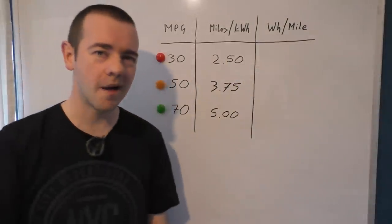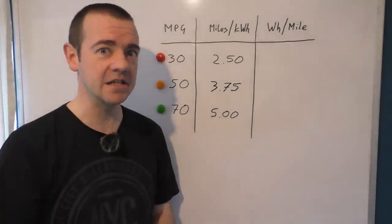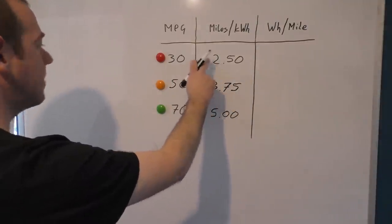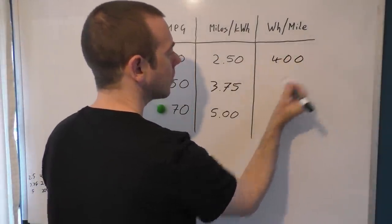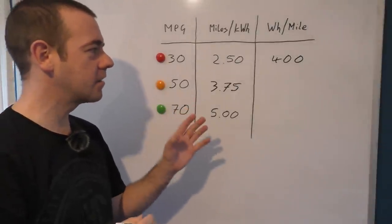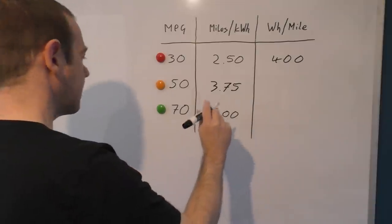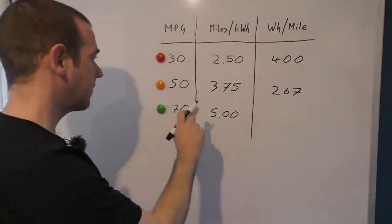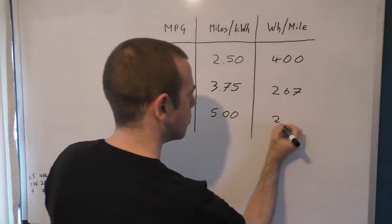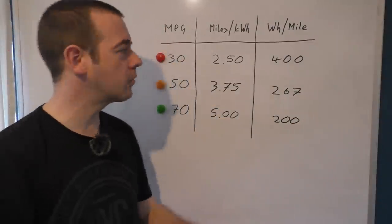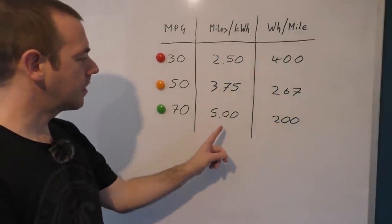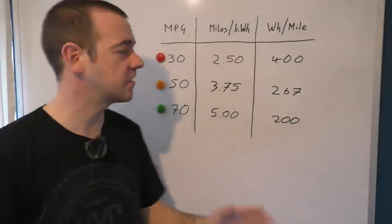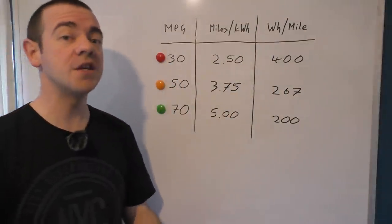But what is that in terms of watt hours per mile? For this, we're going to have to do a conversion. So it's exciting stuff because it involves maths. Well, I'll show you how I do the conversion in a second, but effectively, 2.5 is 400 watt hours per mile. So in this case, the higher the number, the worse it is. 3.75 is 267. I have rounded these numbers up. And 5 miles per kilowatt hour is 200 watt hours per mile. So anyone with a Tesla will be familiar with this. Anyone with most other cars will be familiar with this. But across all EVs, not just Tesla's, not just Kia e-Neros, not just Nissan Leafs, I would say this, for me, is the average in terms of energy efficiency.